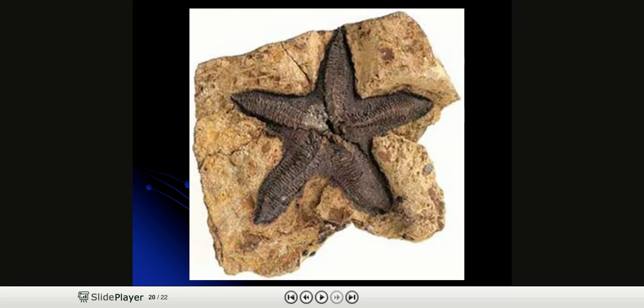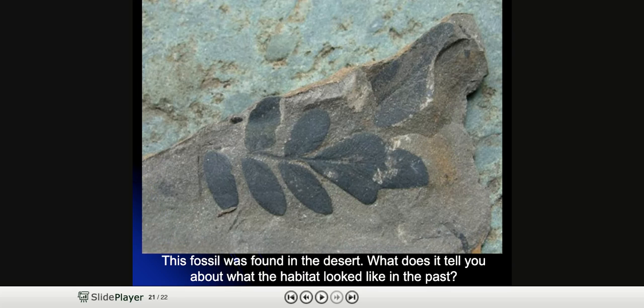This is an example of a fossil that has been found. This fossil was found in the desert — what does it tell you about what the habitat used to look like in the past? Look at this picture and then on the next slide you're going to write down what you think it tells you about what the habitat used to be like.